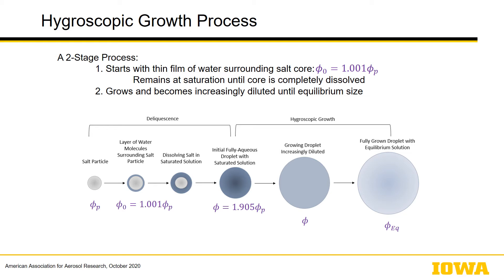Here is what I consider to be an overall framework of the hygroscopic growth process, which includes two stages. First, the dry salt particle must deliquesce: a film of liquid assumed to be near saturation forms around the outside of the particle as it dissolves, until it reaches a droplet size corresponding to a completely saturated solution with no remaining core. After that, classical hygroscopic growth occurs as the droplet dilutes to its equilibrium size. The equations start with an initial diameter slightly larger than the salt particle.